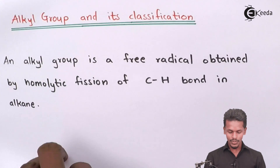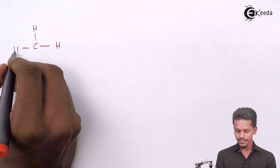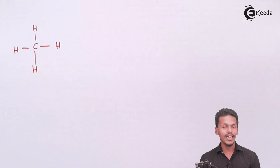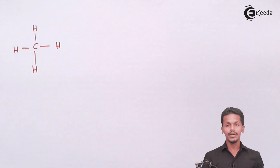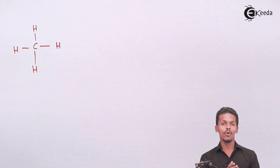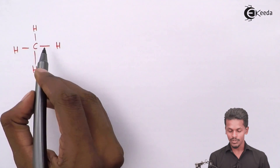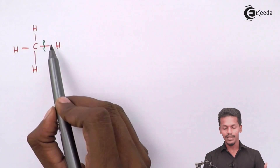Suppose we have taken an alkane like ethane, or suppose the first alkane, that is methane. If this carbon and this hydrogen break homolytically, that means one electron will stay with the carbon and one electron will stay with the hydrogen.